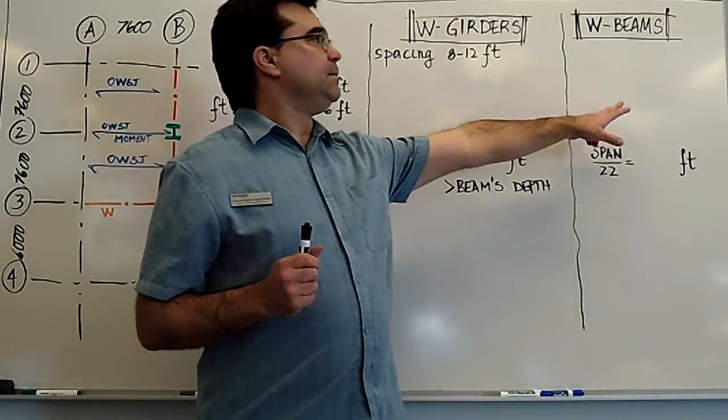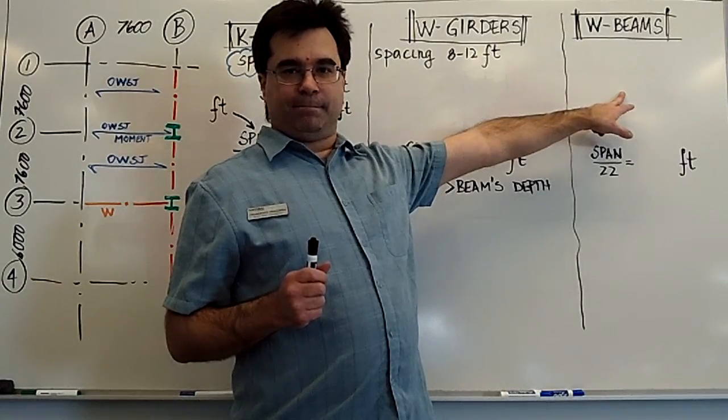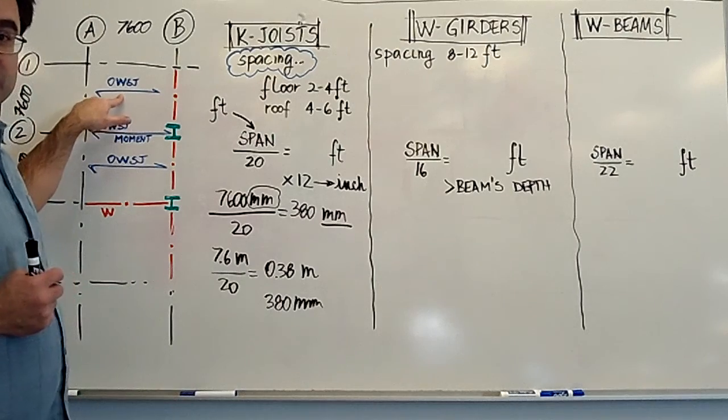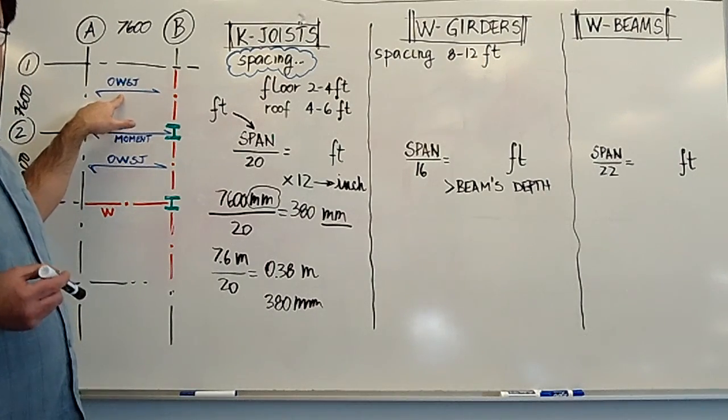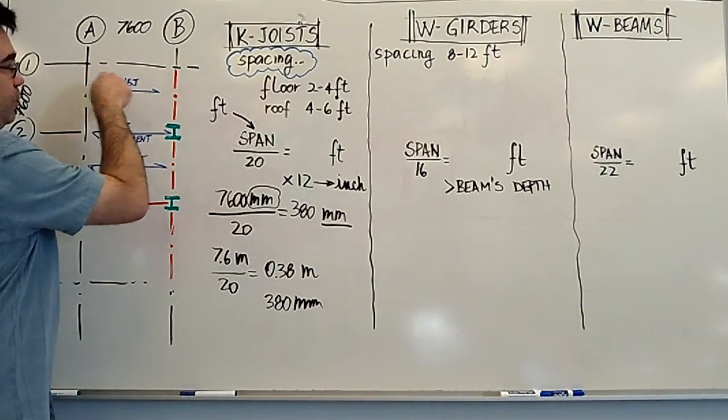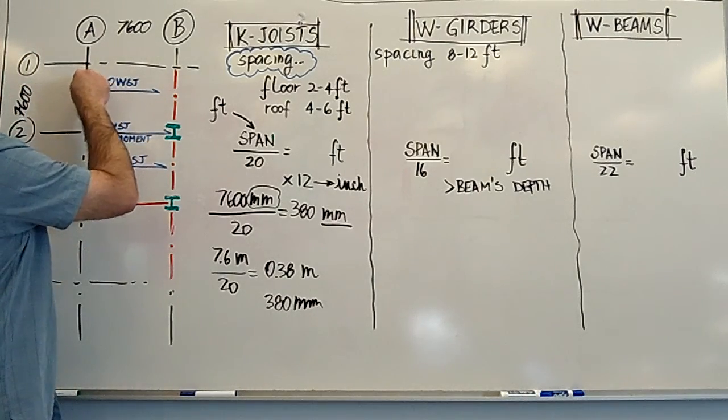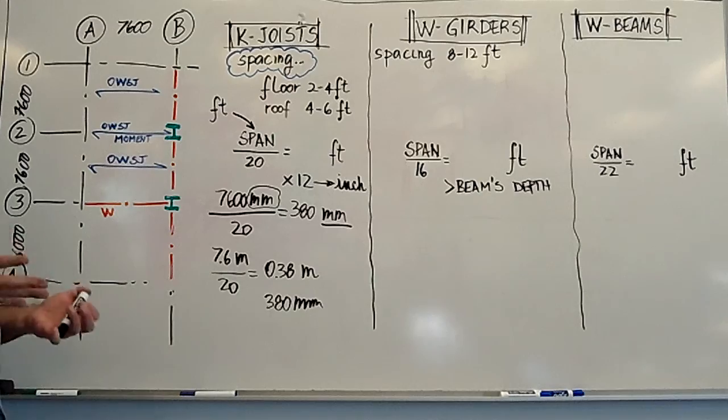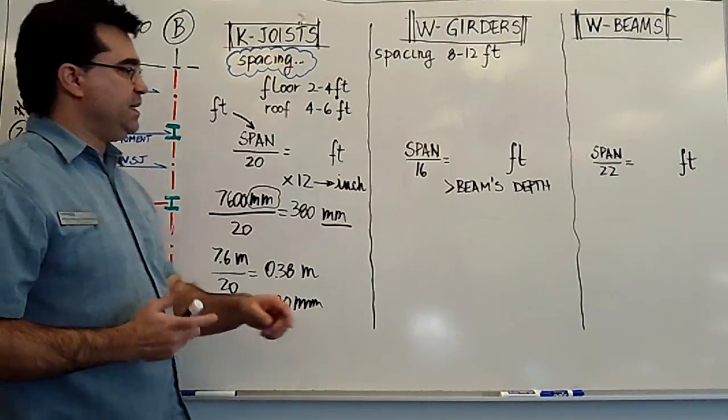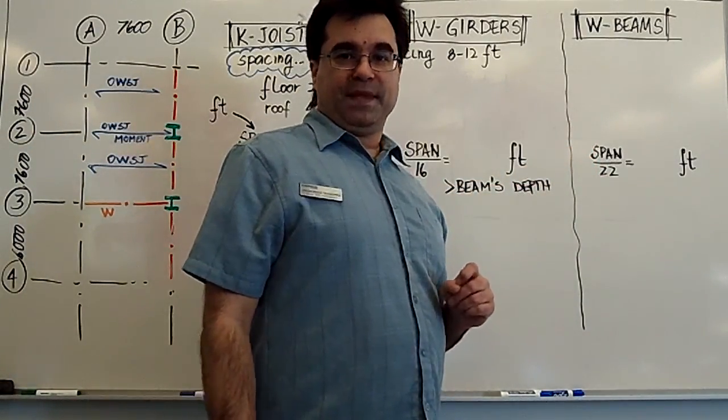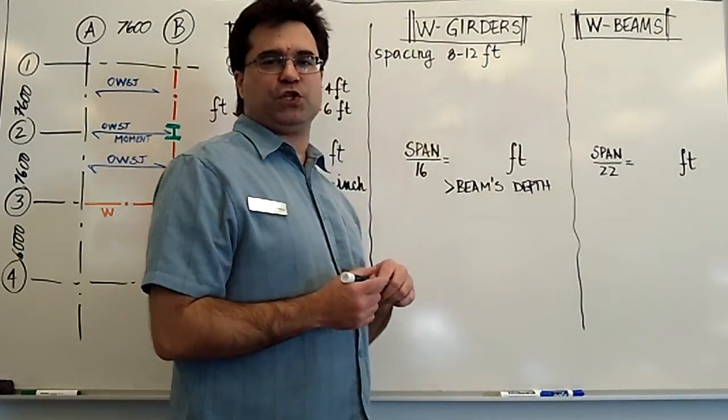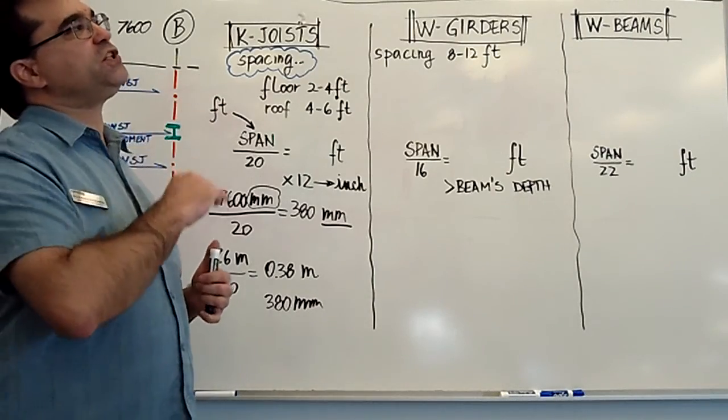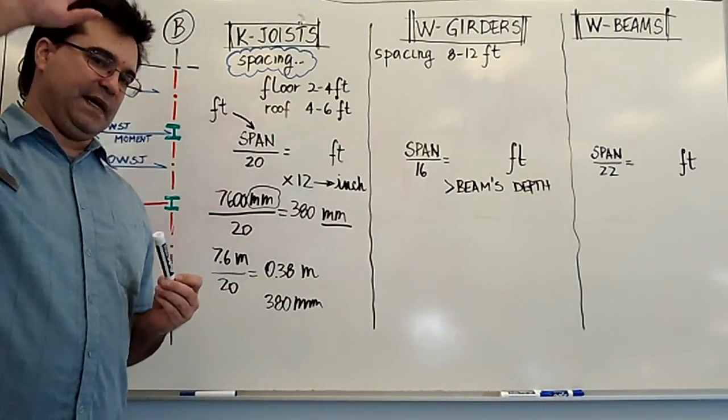Next, let's do beams. W-beams. Because beams, again, could be an alternative to using open-web steel joists as secondary structural elements. Instead of using open-web steel joists everywhere, you would use beams everywhere. The rule of thumb for beams is the span divided by 22. Again, I got that, the same location, appendix B of the third edition of your textbook, approximately page 958 at the top.